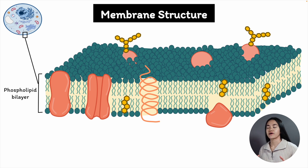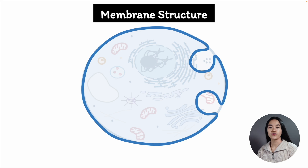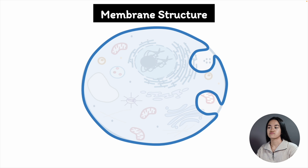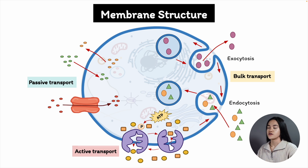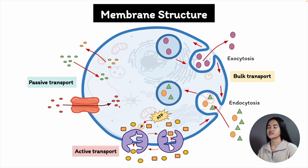All cells are bounded by a selective barrier called the plasma membrane, or the cell membrane. The plasma membrane separates a cell from its surroundings, protects its chemical components from the outside environment, and prevents the contents of the cell from mixing with other molecules in the surrounding environment. But the plasma membrane is capable of much more — it must also allow nutrients to enter the cell and waste products to exit. To carry out these processes there are selective channels and transporters that allow small and specific molecules and ions to be imported and exported.